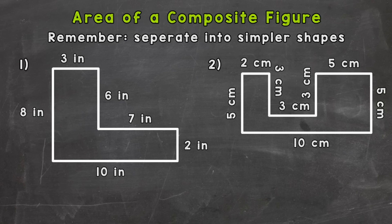What we need to do in order to find the area of these is separate them into simpler shapes that we know how to find the area of. That way we can find the area of the simpler shapes, add them together, and it will give us the area of the whole composite figure. So let's jump right into number one and see exactly what I mean by that.